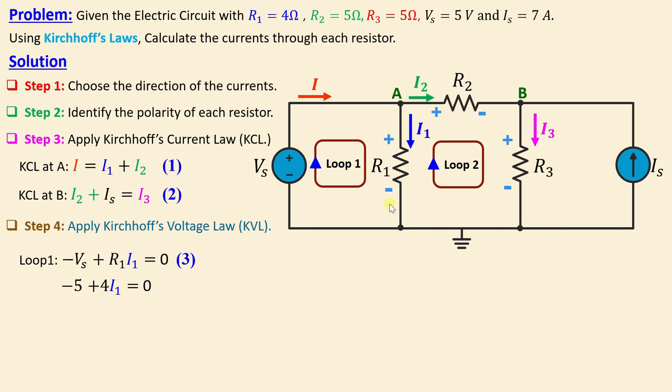We go now to loop number 2. We write loop number 2, negative R1 I1 plus R2 I2 plus R3 I3 is equal to 0. Finally, we obtain negative 4 I1 plus 5 I2 plus 5 I3 is equal to 0.